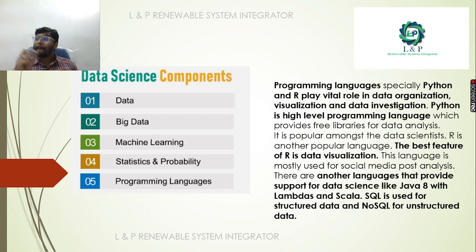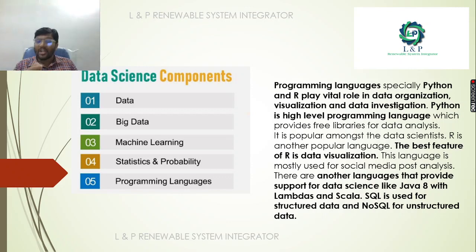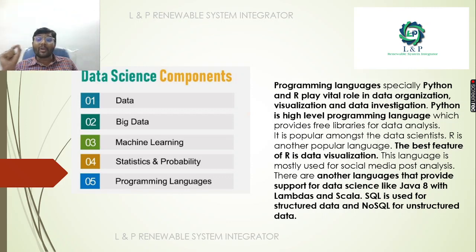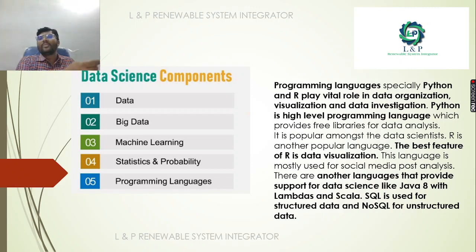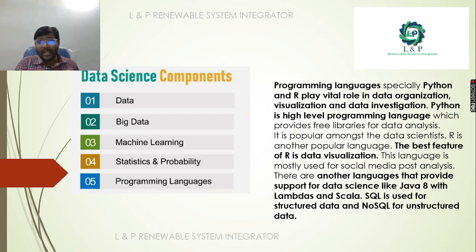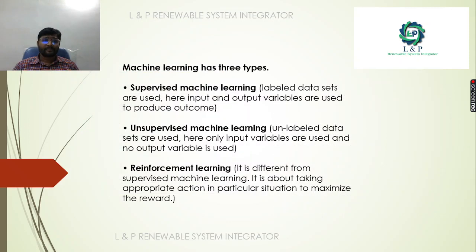The most commonly used programming languages for data science are Python and R. They play a vital role in data organization, visualization, and data investigation. Python is a high-level programming language, and R's best feature is data visualization. Other languages used in data science include Java 8 with lambdas, and Scala. For structured data, SQL is used, and for unstructured data, NoSQL is used.